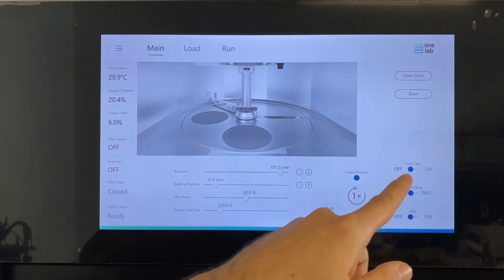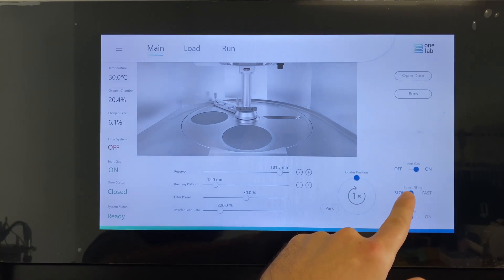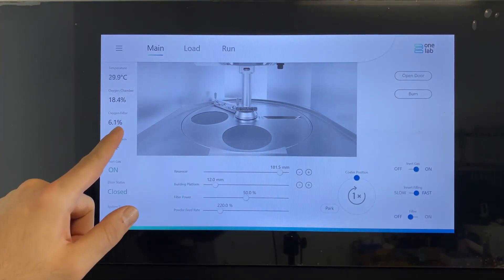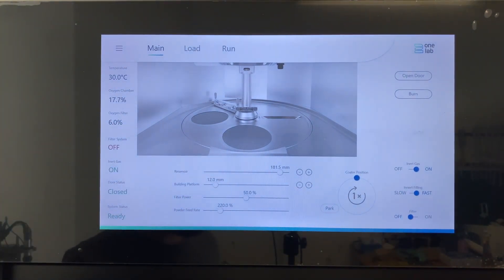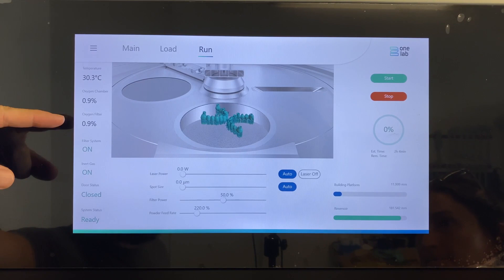For this, we activate the inert gas. We choose fast filling, so it fills faster. And the filtration system can only be activated when it reaches 2%. After about 5 minutes, the oxygen in the chamber and in the filter is below 1%, so we are good to go.